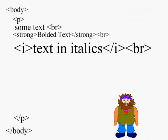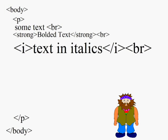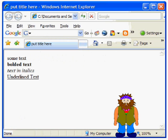Then we'll put in another page break tag and underline the next block of text. The way to underline some text is to put it between an opening and closing tag with the letter U in them. When we save it and open it in the browser, we can see that the next block of text is underlined.